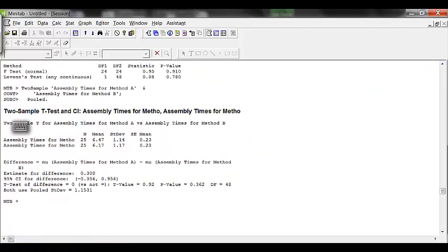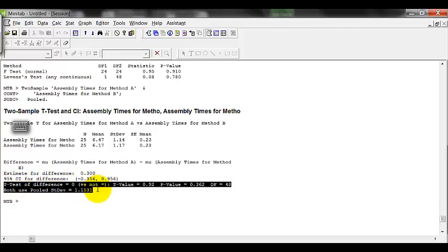So let's see what we have. So if we can tell from here, the variances has been put together. That's why you see 1.1531 here. That's the pooled standard deviation. The test statistic is 0.92. And the p-value is 0.362.